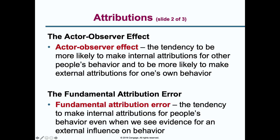The fundamental attribution error is where we tend to blame a person's disposition — labeling them a bad person — instead of blaming the situation they're in. We make this error by focusing internally on the person's character rather than externally on the circumstances that may be driving their behavior.